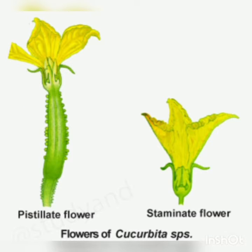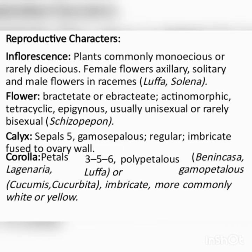These are the flowers which show staminate and pistillate types. Coming to the inflorescence: plants are commonly monoecious or rarely dioecious. Female flowers are axillary and solitary, and male flowers are in racemes. Flowers are bracteate or ebracteate, actinomorphic, tetracyclic, epigynous, usually unisexual or rarely bisexual.